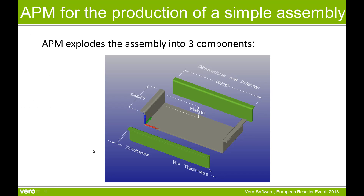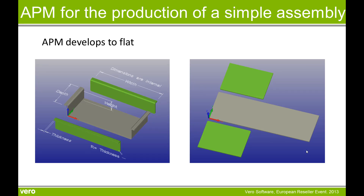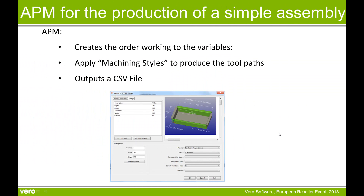Within APM we create a master assembly and then three sub-components. APM automatically explodes this into the three sub-components, driven by three constrained drawings that have already been developed to flat to ensure we have the overall correct size of each sub-component. APM will create an order working to the input variables, apply machining styles automatically to produce the correct toolpaths in the correct order, and output a CSV file to allow us to do nested base manufacturing using CAD to CAM.